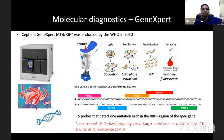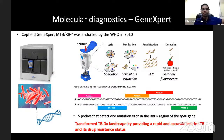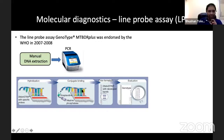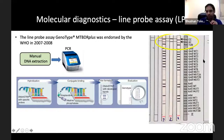Even before 2010, there was an assay called Line Probe Assay by a company called Genotype, endorsed by the WHO in 2007–2008. You manually do PCR amplification, and then there is a paper-based strip on which many DNA probes are adhered. The sample is flowed over the strip; if a point mutation exists, binding is not efficient, and you can wash away the unbound DNA. The lines on the strip tell you what kind of mutations are present.